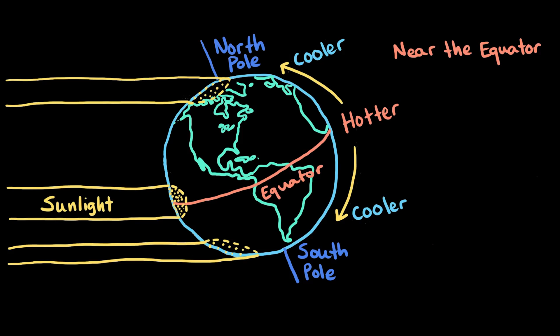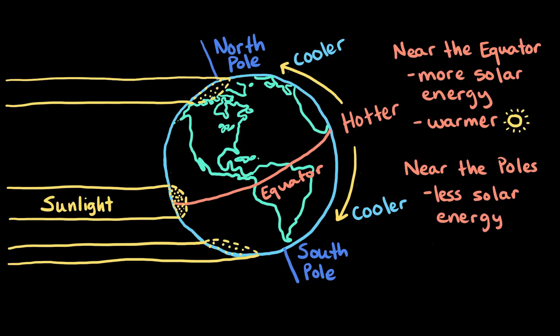So, the regions near the equator get more solar energy, which makes them warmer, and the regions near the poles get less solar energy, which makes them cooler.